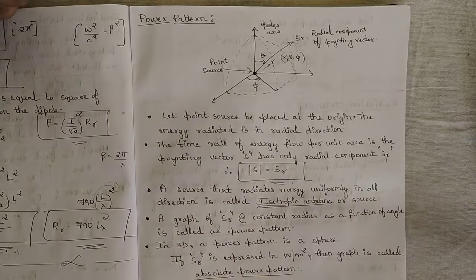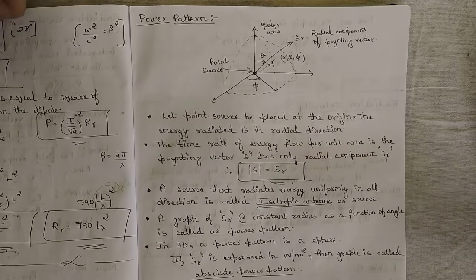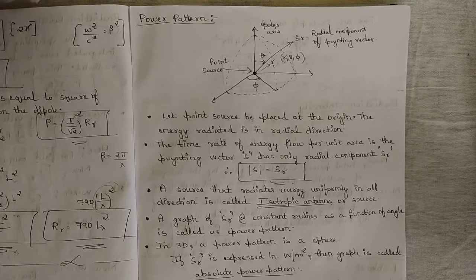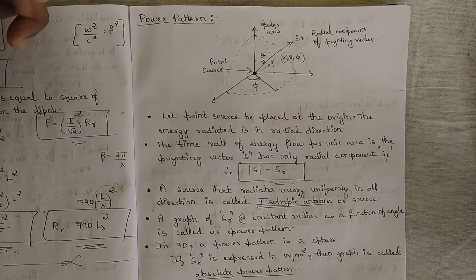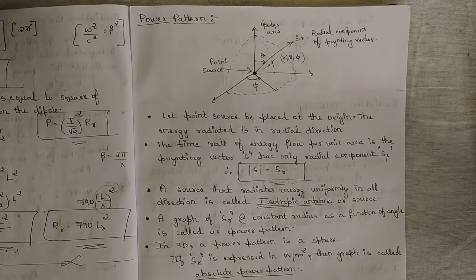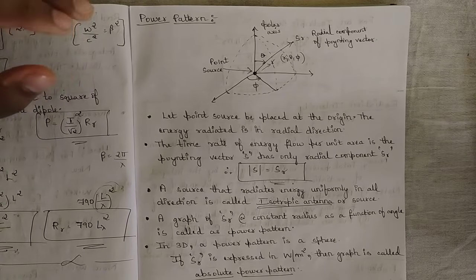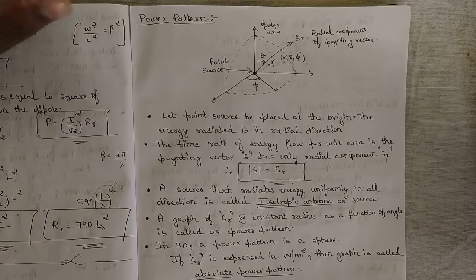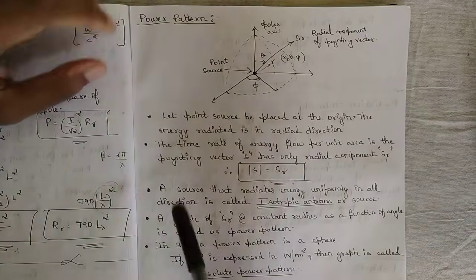Hello everyone, welcome to this new video. In my previous video I discussed the concept of radiation resistance of the short electric dipole, and at the end I introduced point sources. Point sources are volumeless emitters which radiate power in the form of a point placed in free space. They work under far-field conditions and boost radiation in a dipole or antenna. Today we are going to discuss power pattern, power theorem, and radiation intensity.